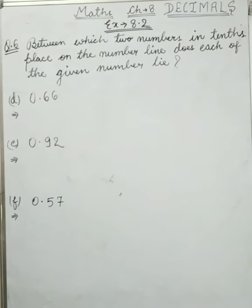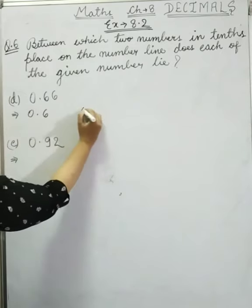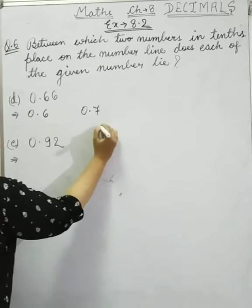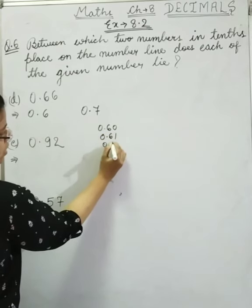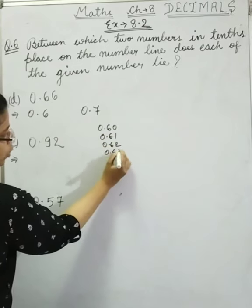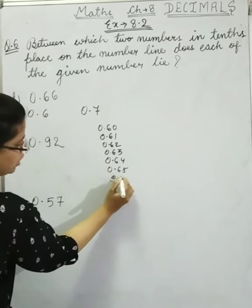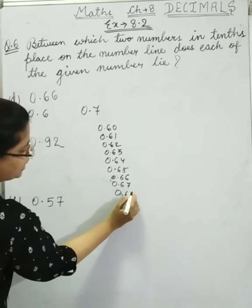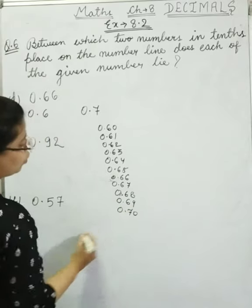Next is d: 0.66. If we look at this, we can see 0.6. And the next is 0.7. So writing it out: 0.60, 0.61, 0.62, 0.63, 0.64, 0.65, 0.66, 0.67, 0.68, 0.69, and 0.70.